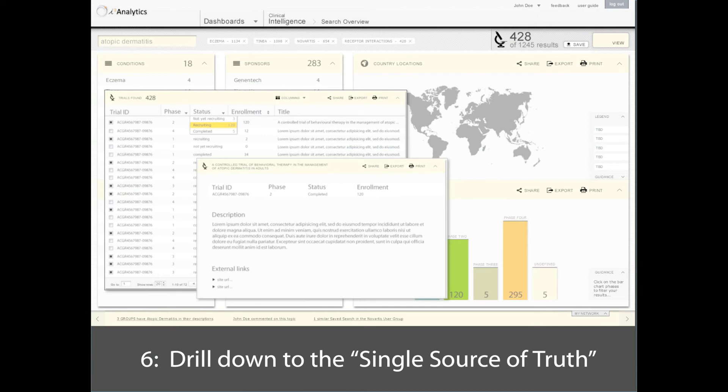Now, if you select the phase four trials of 295, the expectation is that you go to a list of 295 and you drill down to some detail about that. The detail is what's the single source of truth and also what the user can see at that point in time.